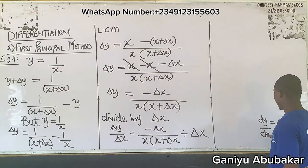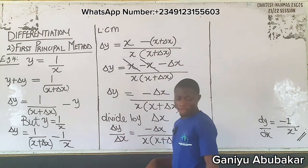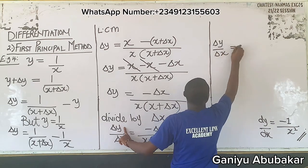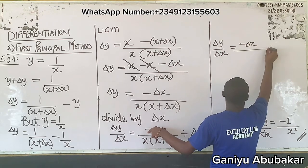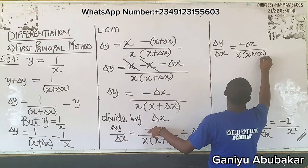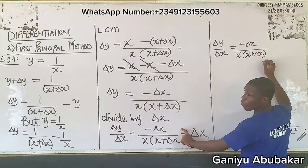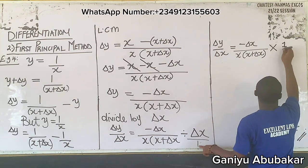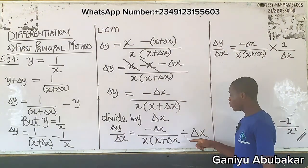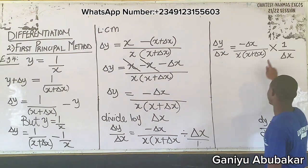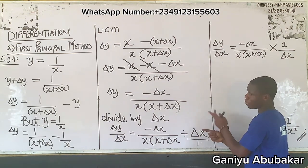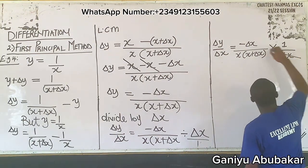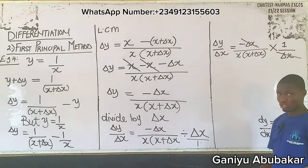dy/dx is the same as change in y over change in x. So change in y over change in x equals minus change in x all over x into (x plus change in x). Dividing — using the reciprocal concept, this division becomes multiplication. The change in x terms cancel, giving change in y over change in x equals minus one all over x into (x plus change in x).